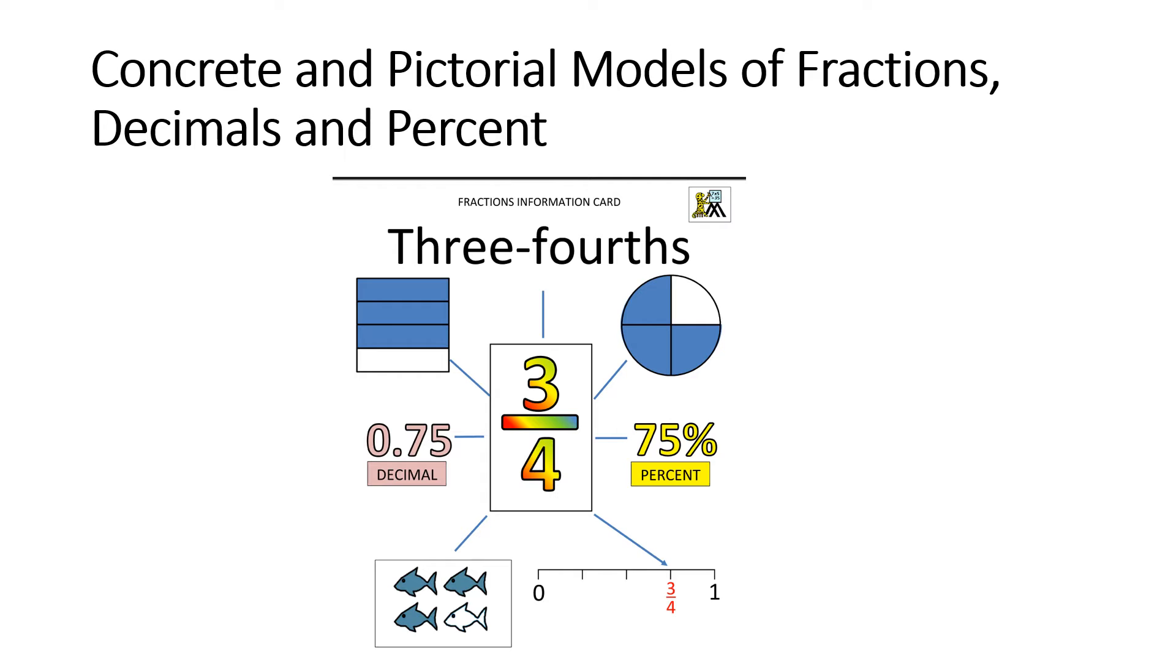Same goes for the circle. There are three shaded triangles and there are four total parts. So when we look at this, this is how we determine it. And also they might even give you a picture of four fish with three shaded. This represents three-fourths.